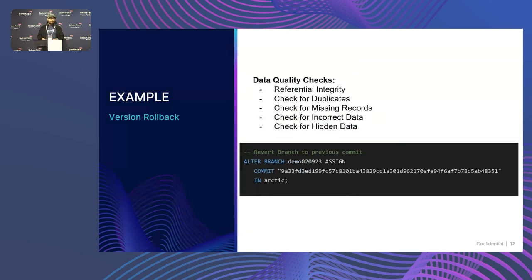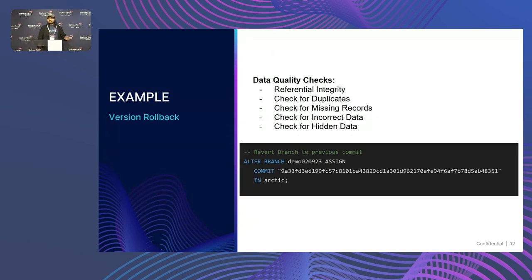What if there is a problem, or what if I pass that test but then make some other edits and make a mistake? I can just roll it back. Rolling it back is as easy as finding the commit number I'd like to roll back to, and using this statement — ALTER the branch, and for this branch, make it point to this commit. All those mistakes never happened, really with just one SQL statement. And it's not just for one table: if I made a mistake across 100 tables, that one statement would fix all 100 tables, because Dremio Arctic does it at the catalog level — it's versioning the whole catalog.